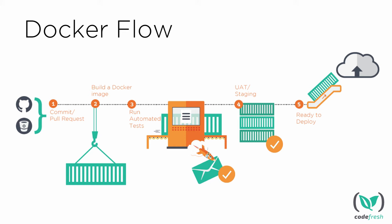The flow will be triggered by any commit or pull request that one of the developers in the team is making. Codefresh will immediately start building a Docker image for each commit or pull request. Once the Docker image is built, Codefresh will start running all the automated tests against it — unit tests, integration tests, UI testing — and once tests pass, the Docker image will be pushed to the Docker registry and available for user acceptance testing, performance testing, and so on.